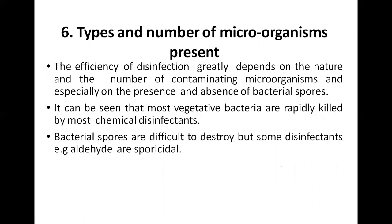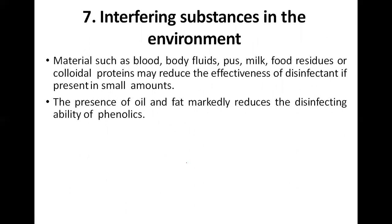The type and number of microbes also matters — more microbes make decontamination more difficult, and different types require different disinfectants. Most vegetative bacteria are rapidly killed by most chemical disinfectants, but spores are difficult to kill — only certain disinfectants like aldehydes are sporicidal. Materials such as blood, body fluids, pus, milk, food residues, and colloidal proteins may reduce the effectiveness of disinfectants.